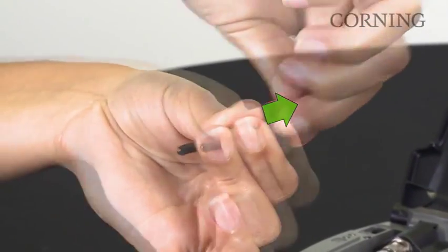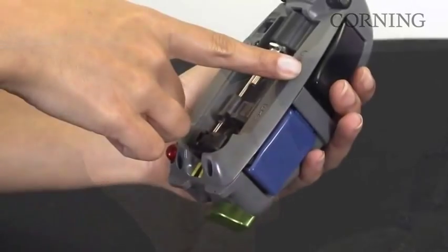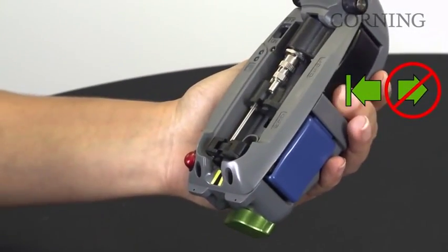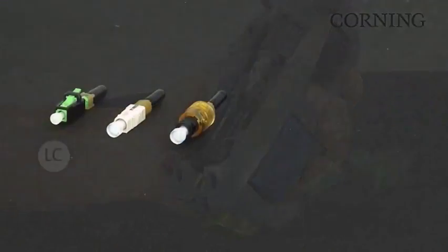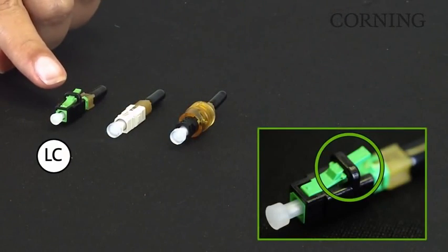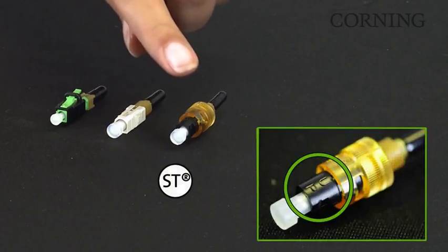Remove the dust cap from the ferrule and the black dust cap from the lead-in tube. Depress the black load button until a positive stop is reached. Do not release it. All three connector designs use a different feature to indicate orientation of the connector when installed in the tool.